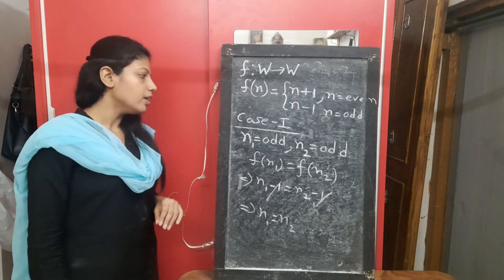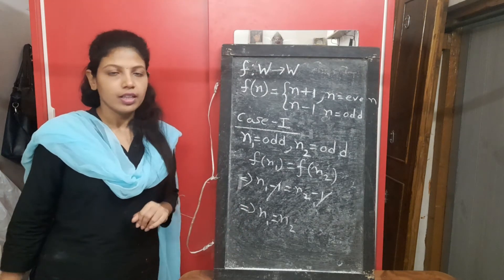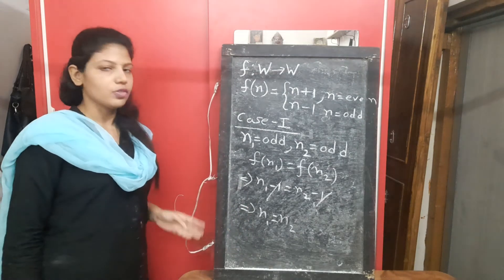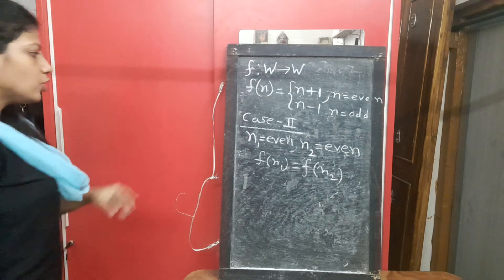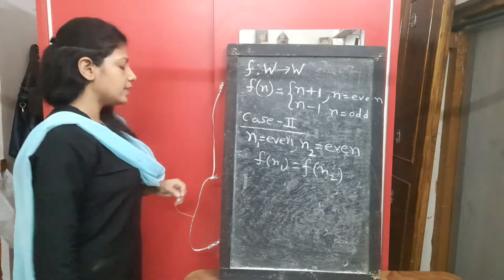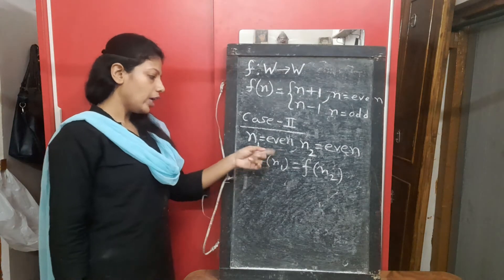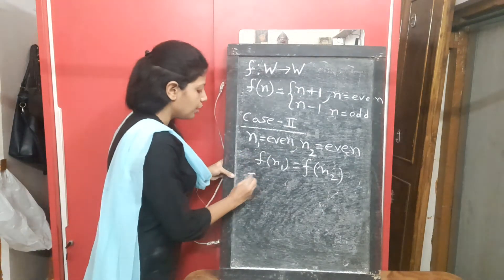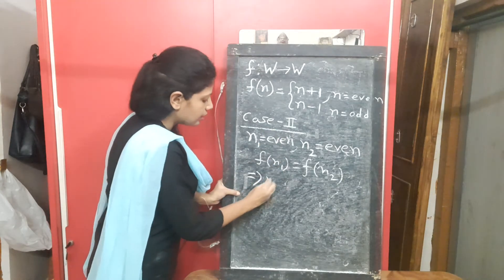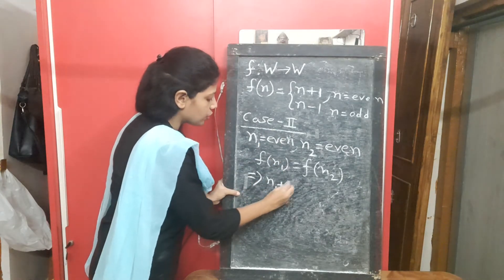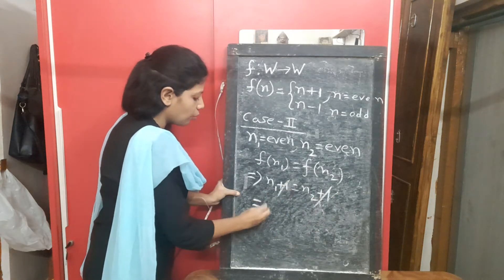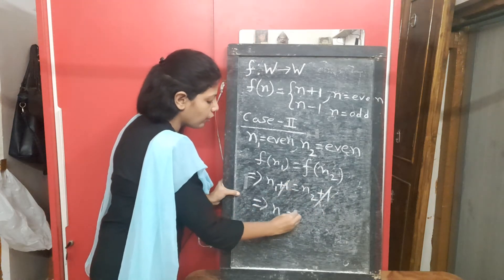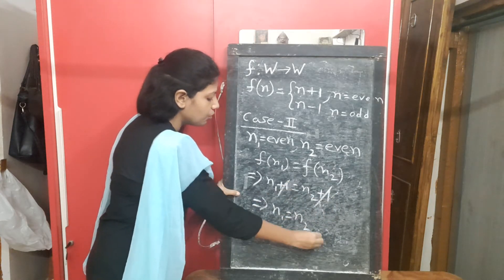Case 2: both numbers are even. If f(n1) = f(n2), then since both are even: n1 + 1 = n2 + 1. Cancelling on both sides gives n1 = n2. So in this case also n1 = n2.